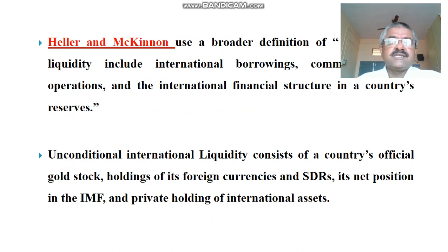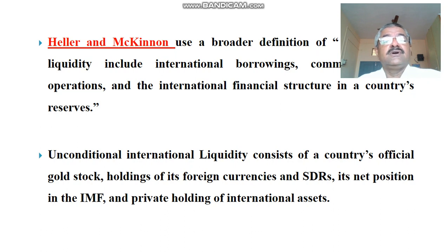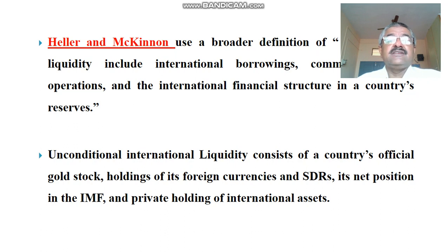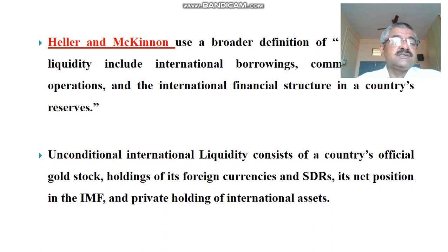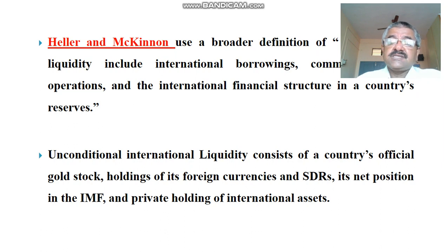If countries have all these amounts in use, then there is no problem of international liquidity. Heller and McKinnon define it in a broader way — international liquidity includes international borrowings, commercial credit operations, and the international financial structure in a country's reserves. In international liquidity, there are two types of resources: conditional and unconditional. The unconditional international liquidity consists of a country's official gold stock holdings, foreign currencies, SDRs, its net position in the IMF, and private holdings of international assets.